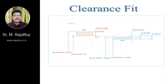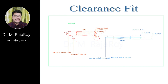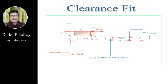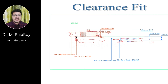Now represent the results graphically. Take a zero line — for the hole, mark the maximum diameter and minimum diameter, representing upper deviation and lower deviation respectively, where lower deviation is zero. On the same zero line, represent the shaft with its upper deviation and lower deviation, and indicate the tolerance zone. In this way you can graphically represent the clearance fit. Thanks for watching this video.